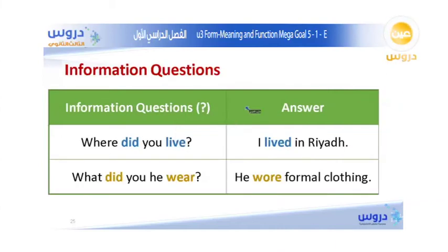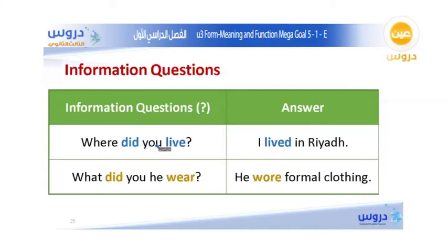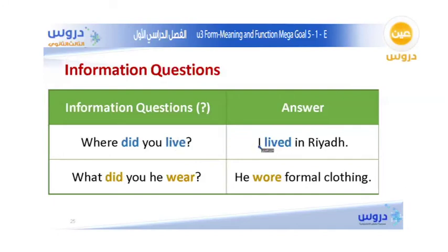For information questions in the simple past, we use the WH-word plus did plus the base form verb. For example: Where did you live? To answer, we change the verb into the past form. The answer is: I lived in the past — meaning we use the past form of the verb.